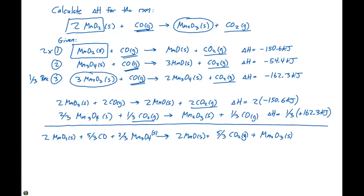Here's our overall reaction and we can get this by adding the negative 150.6 times 2 plus a third times the 162.3 together. But this would give us the delta H for the reaction that I have listed here. And what we don't want in here is the Mn3O4 and MnO.